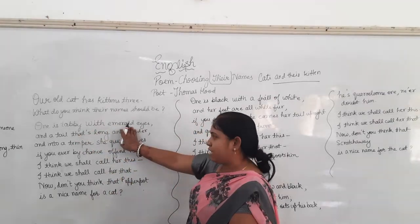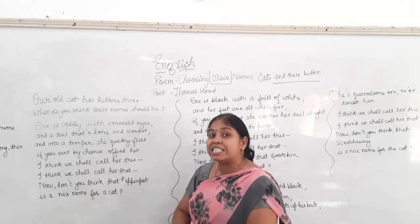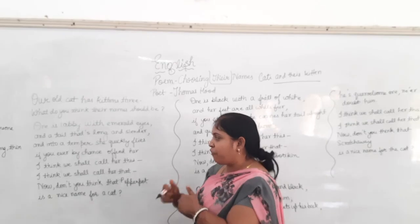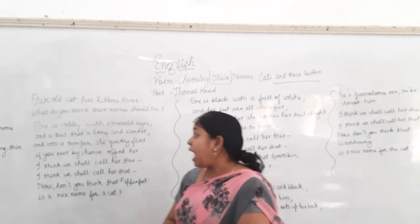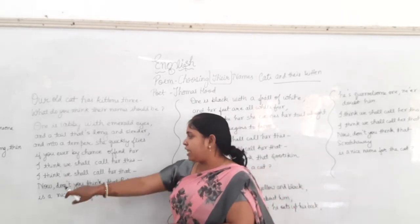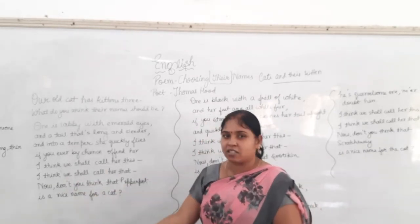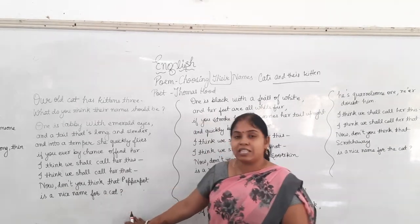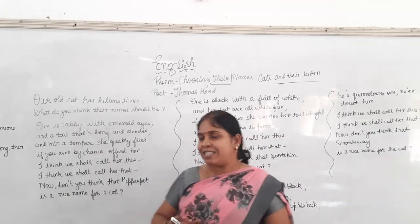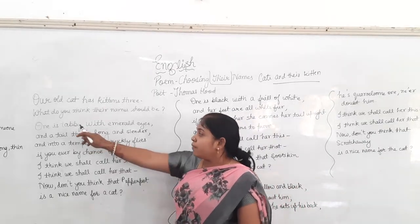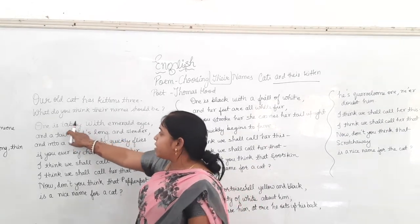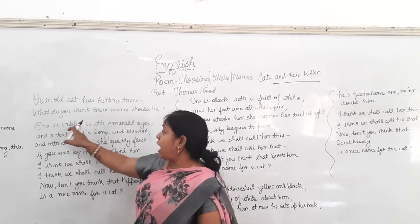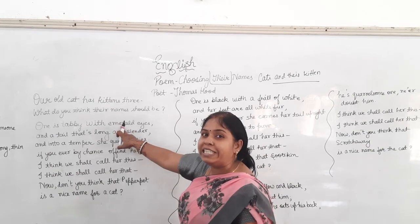The first kitten has humble eyes and a dear that's long and slender. And into a trap where she quickly flies, if you ever by chance omit her. The cat is brown and black colored, and its eyes are of a bright green color.